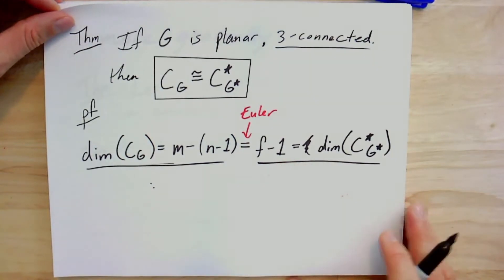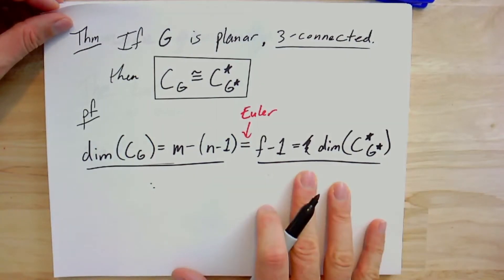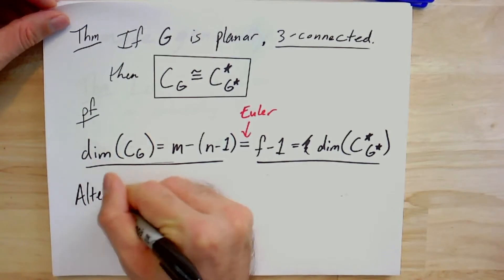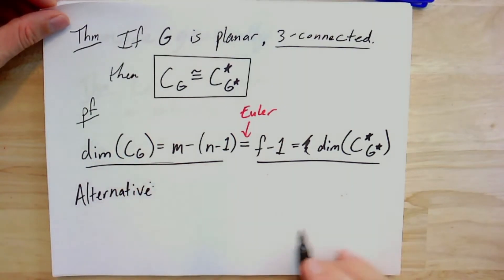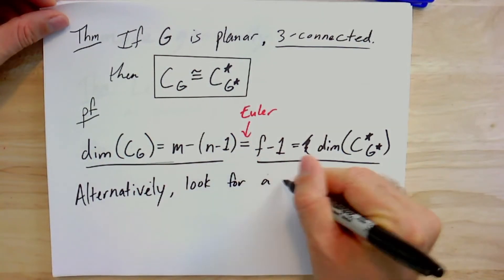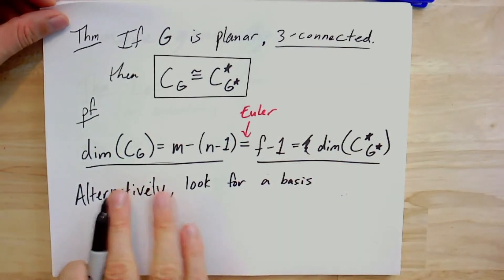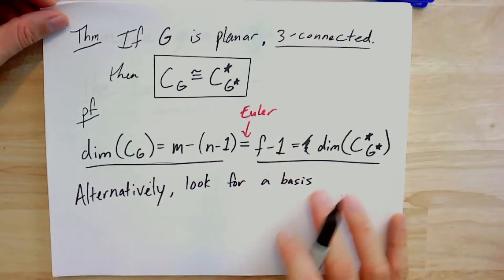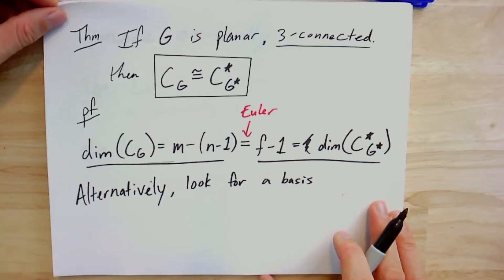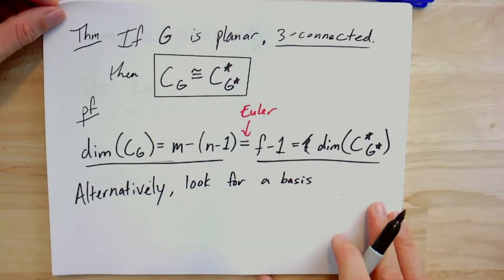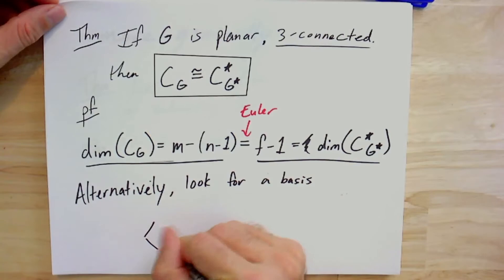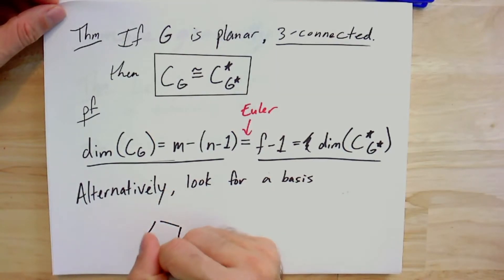All we did was apply Euler's formula to get this equality, and then use the known values for the dimensions of these two spaces. Any two finite-dimensional vector spaces with the same dimension are isomorphic. Alternatively, you could write out exactly what the correspondence is: find a basis for both spaces and map basis elements to basis elements. That's how you write the linear transformation — you extend the linear map by what happens to the basis elements. The key idea is to take a face cycle.